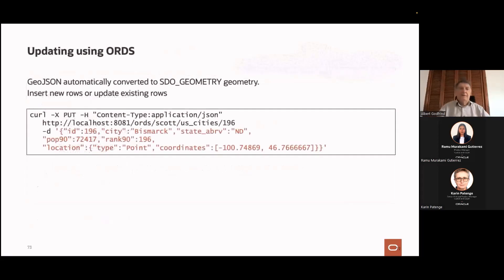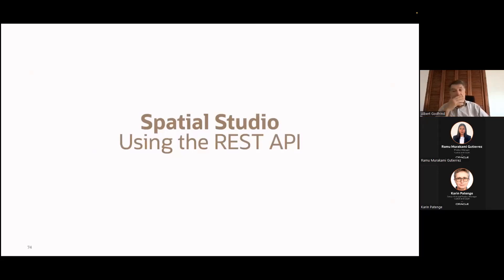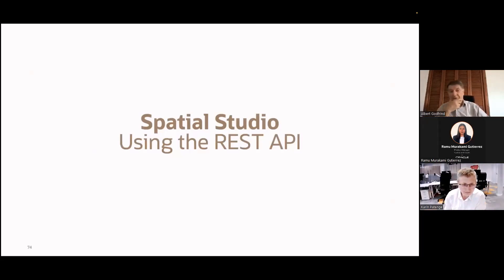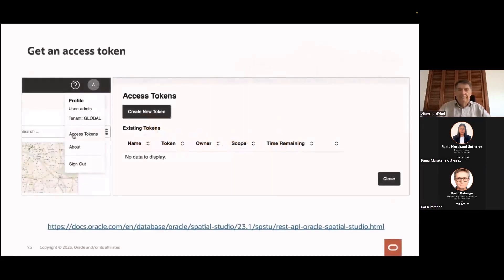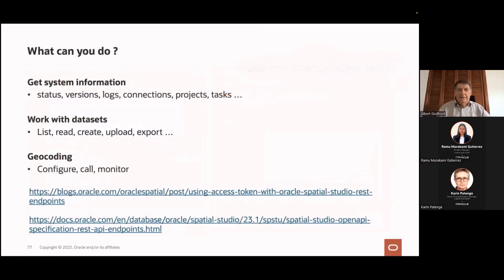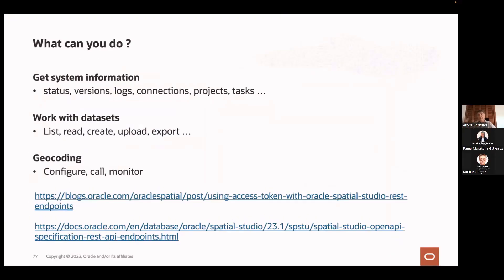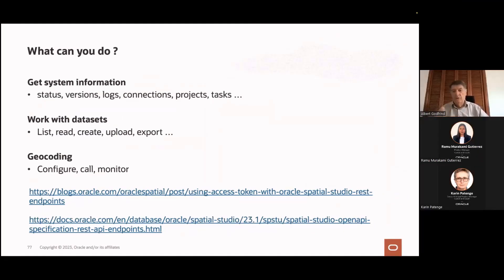The last bit: I think this deserves a separate session exploring the REST API of Spatial Studio. To highlight a few things: with the Studio REST API you can find out server status and versions, read the logs, find information about connections, projects, tasks, datasets, upload and export, create and configure geocoding, do monitoring, and more. There are two URLs: a blog post that talks about what you can do, and the documentation that gives more detail.